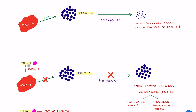So if you introduce drug 1, which is an enzyme inhibitor, it inhibits this enzyme activity. So this enzyme no longer has any activity on drug 2, meaning drug 2's metabolism is hindered or prevented. What happens is the concentration remains the same — after enzyme inhibition, the concentration of drug 2 remains unchanged, which is why there will be increased circulating levels and prolonged pharmacological effects.